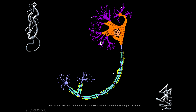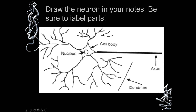Dendrites take messages towards the cell body, while axons take messages away from the cell body. We can call these the sender and the receiver, like the antenna receiver we had in the old times. If any of you were born in the 90s, you must have noticed a television along with an antenna located on top of the terrace.